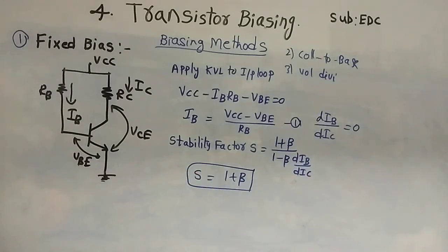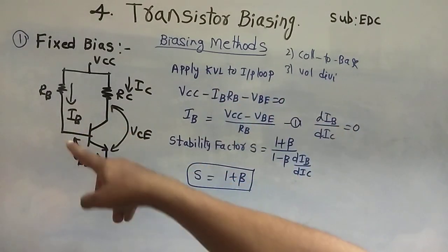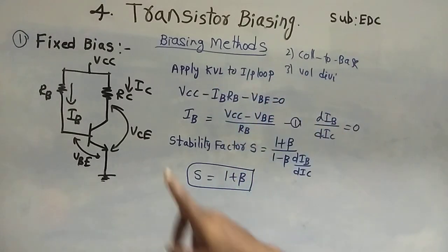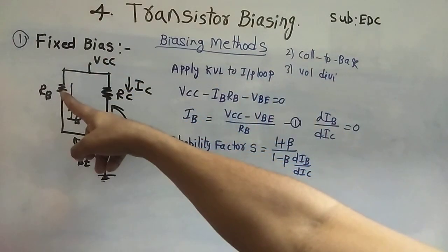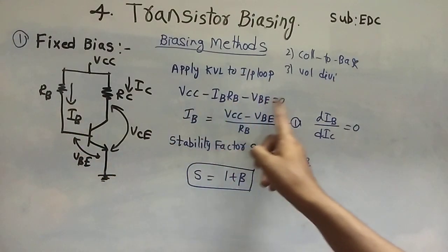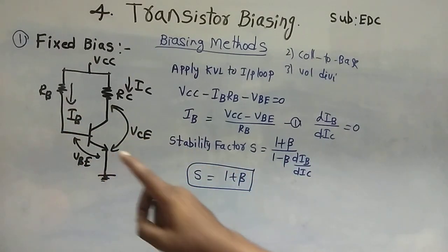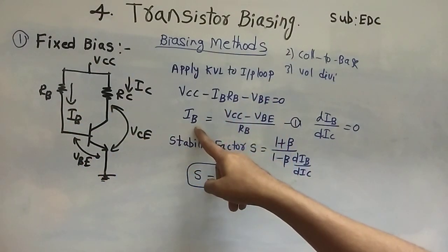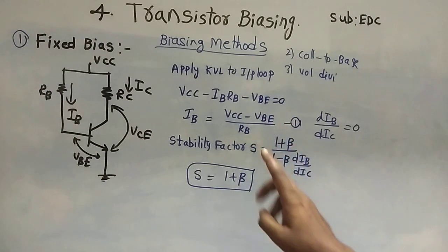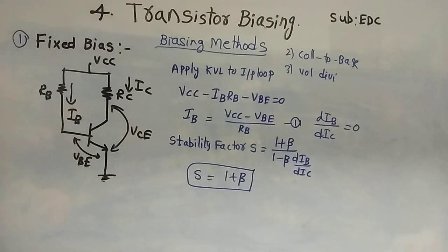For this fixed bias circuit we have to find IB. Since IB is in the input loop, we apply KVL to the input loop. From the input loop: VCC minus IB·RB minus VBE equals zero. From this equation, IB equals (VCC minus VBE) divided by RB. This is the IB equation.